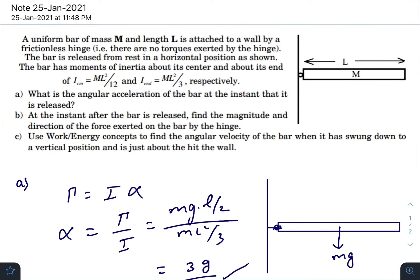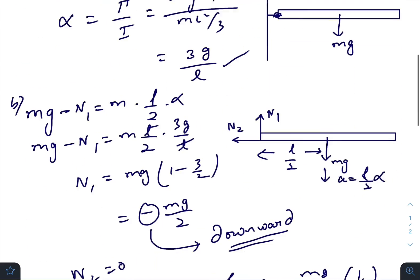And our last question, they have asked that we need to use work energy concepts to find the angular velocity of the bar when it has swung down to a vertical position and is just about to hit the wall.